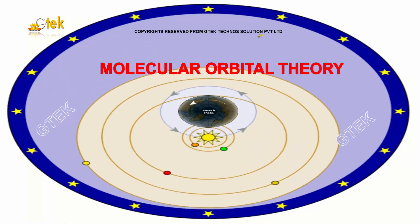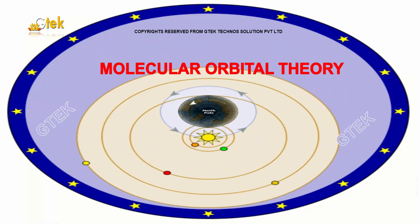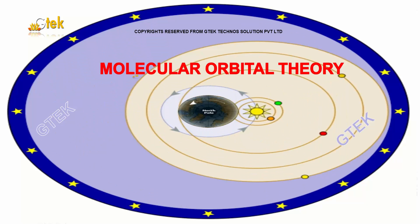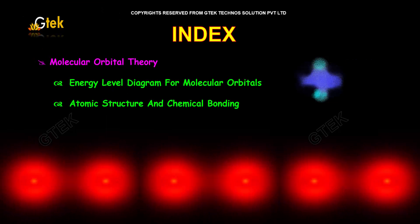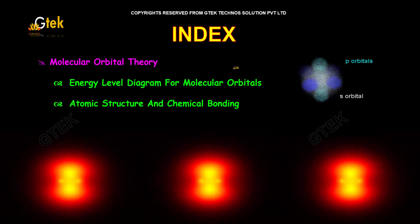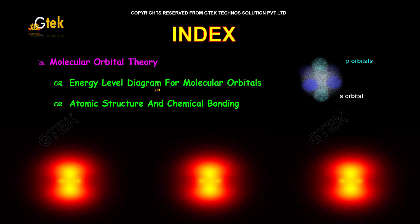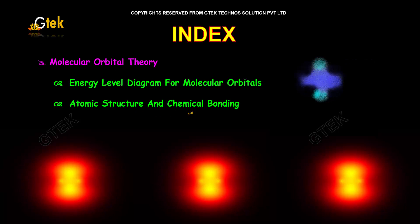Let's look into the molecular orbital theory — how the orbital theory and how the molecules are associated with this orbital theory. This is the index we are going to look into: the molecular orbital theory, the energy level diagram for molecular orbitals, and the atomic structure and chemical bonding of molecular orbitals.